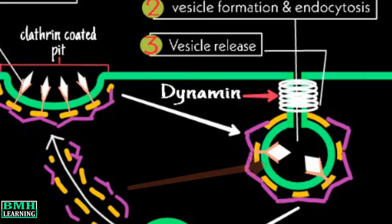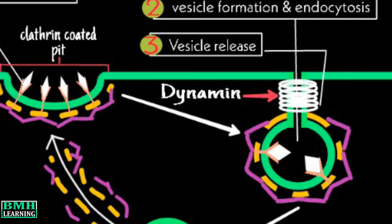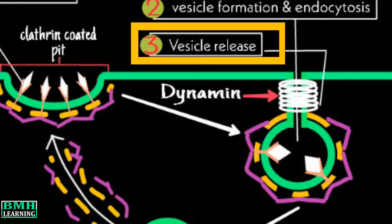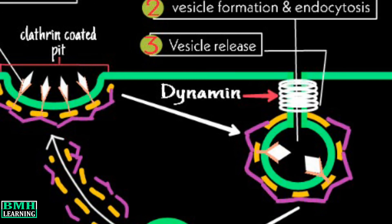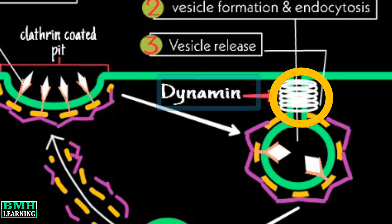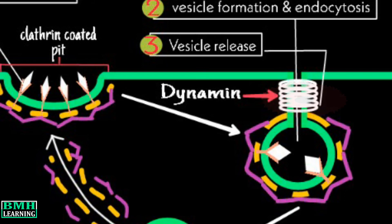Now for this vesicle to reach its target, we jump to step 3, which is vesicle release. For the release of the vesicle, we have a protein called dynamin, which helps in the cutting of the vesicle from the membrane.